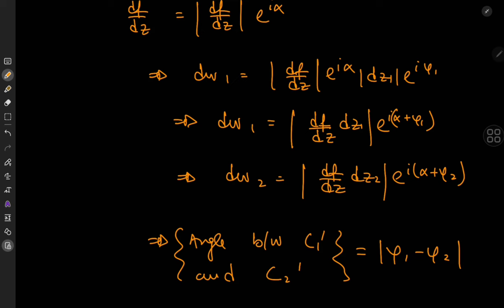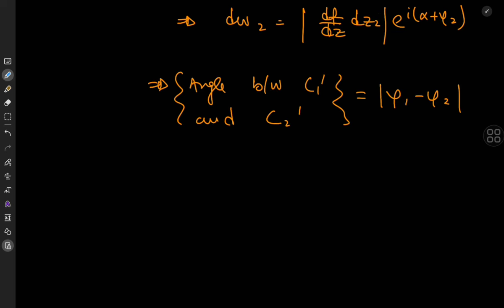So we see the angles here were preserved. So for a function to be a conformal mapping we need it to be holomorphic. But that's not the only assumption I started out this analysis with, I also said that the derivative of the function is non-zero. Why is that important?